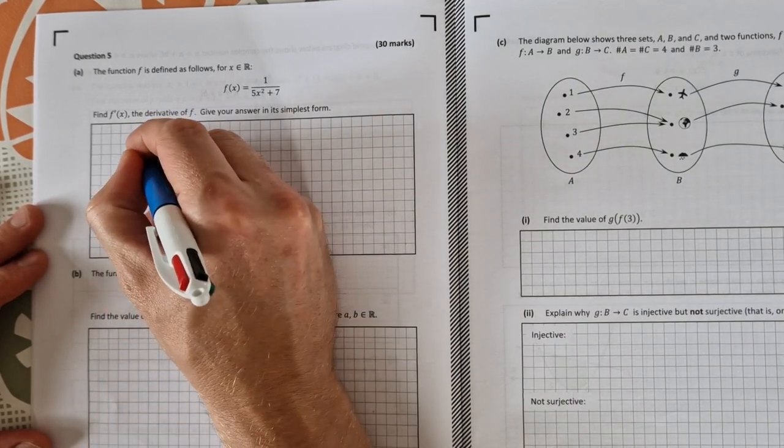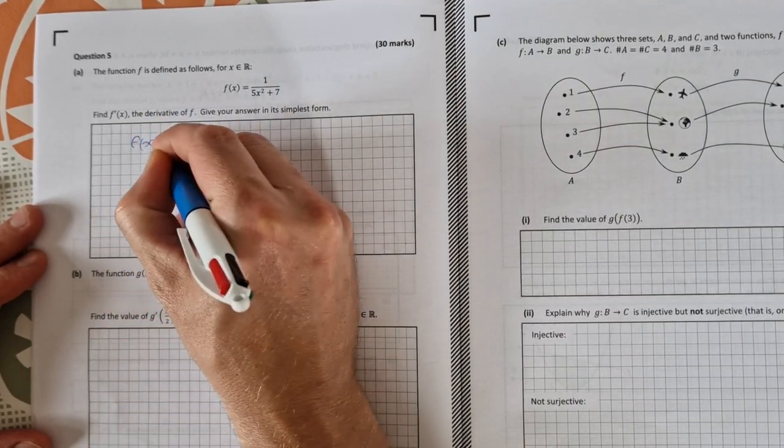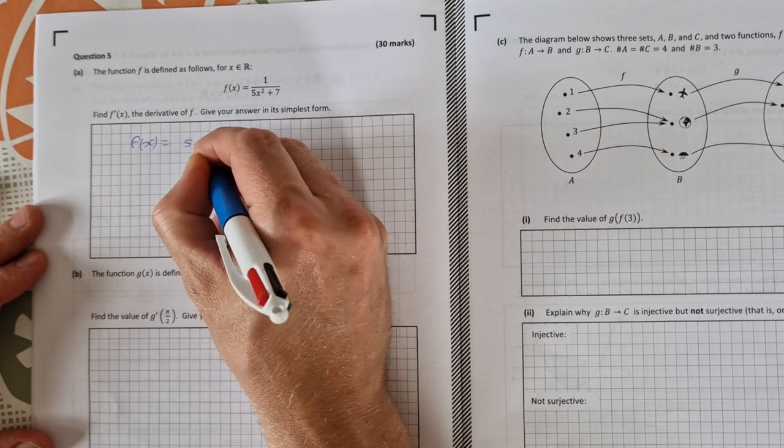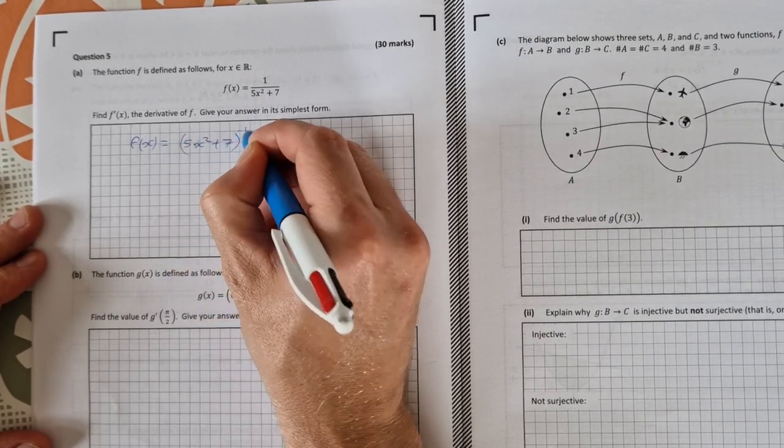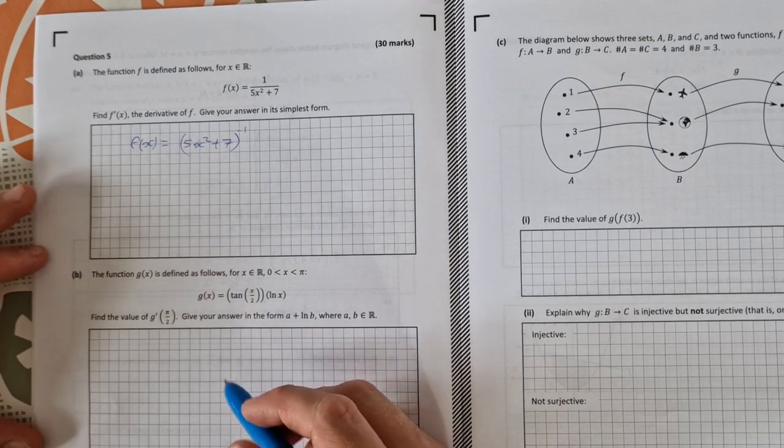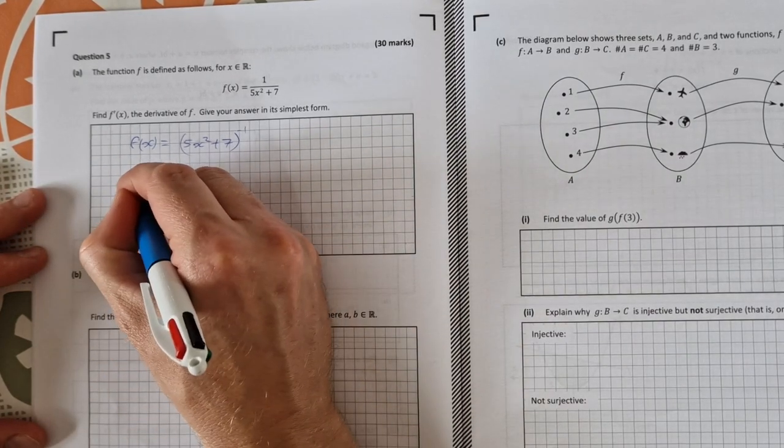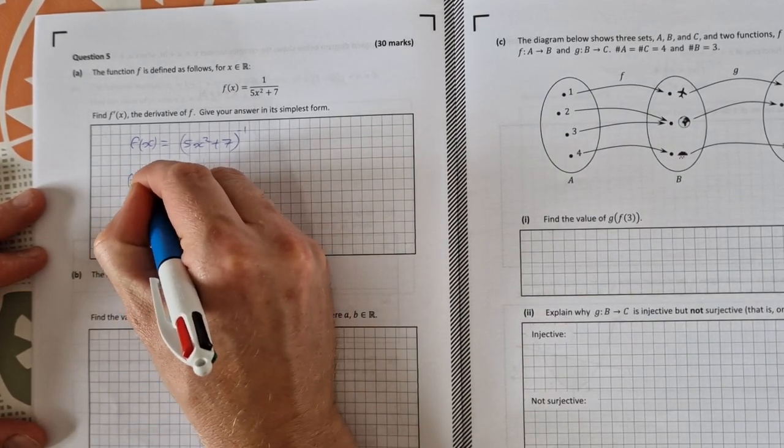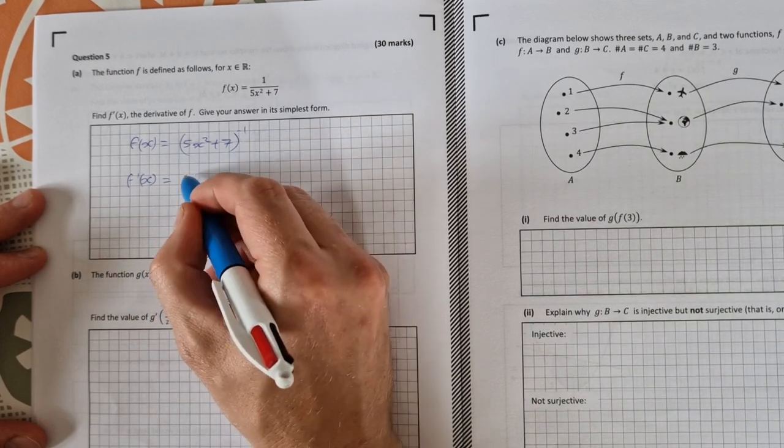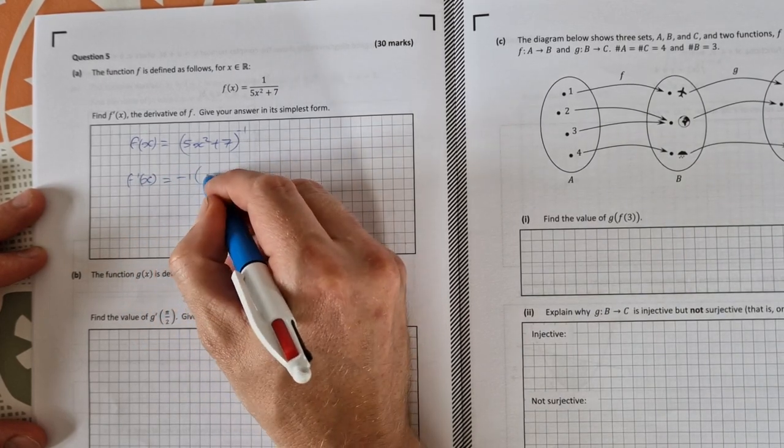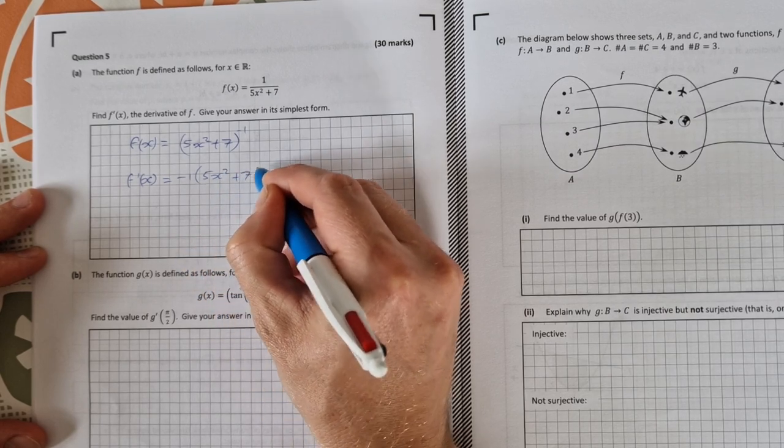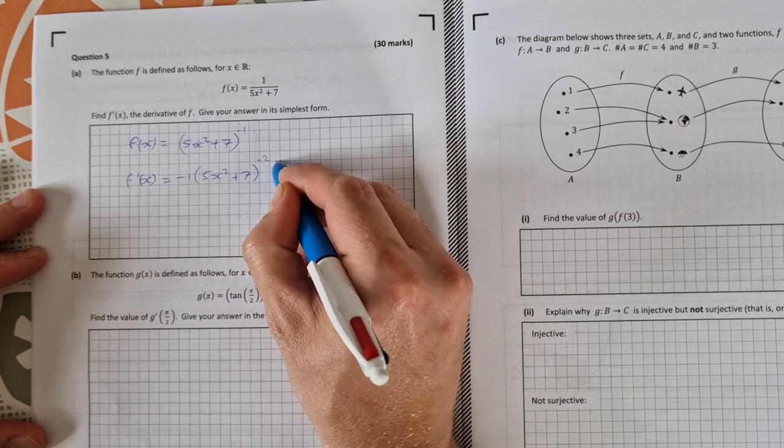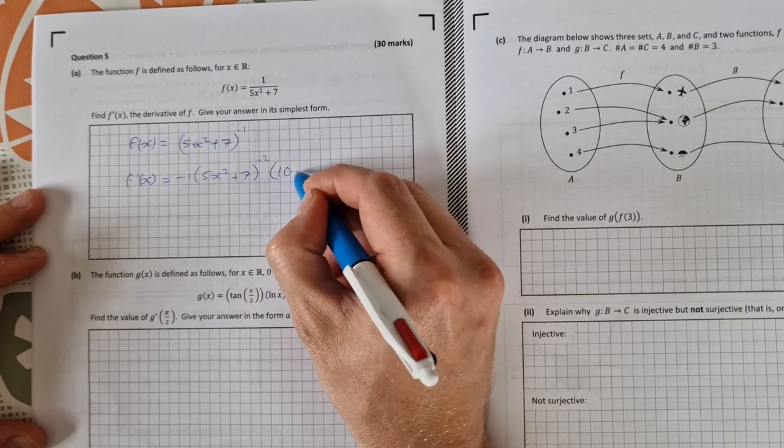The way you do that is you rewrite it as f of x equals 5x squared plus 7 to the power of minus 1 and then you can just do it as a little chain rule. So f prime of x equals minus 1 times 5x squared plus 7 to the power of minus 2 multiplied by 10x.